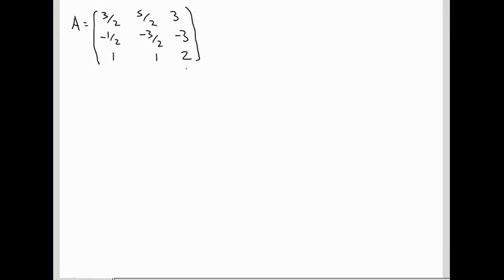So what's its characteristic polynomial? If we subtract t off all the diagonal entries, we get 3 halves minus t, 5 halves, 3, and then minus 1 half, minus 3 halves minus t, minus 3, 1, 1, 2 minus t.